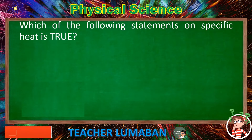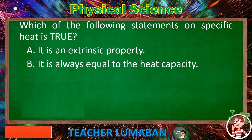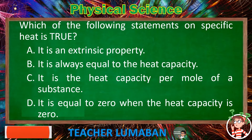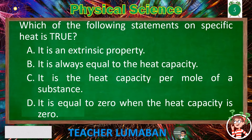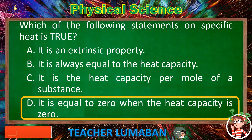Which of the following statements on specific heat is true? Letter A: it is an extrinsic property. Letter B: it is always equal to the heat capacity. Letter C: it is the heat capacity per mole of a substance. Letter D: it is equal to zero when the heat capacity is zero. The correct answer is Letter D. It is equal to zero when the heat capacity is zero — this is a true statement on specific heat.